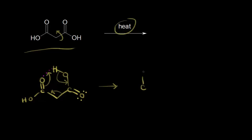We would have a carbon bonded to an oxygen, bonded to hydrogen, and then we have an OH over here. Then we'd have a double bond between this carbon and another carbon. On the right, we would actually form CO2. Let me put in lone pairs of electrons on that oxygen, so we can see that we would form our carbon dioxide molecule here.